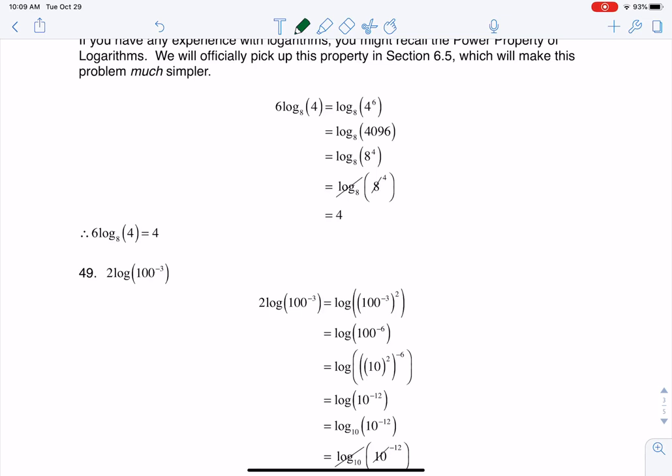And when I say these problems, I mean, what do you do when you have a coefficient out in front? And if you've ever done any logarithmic work before, you've probably seen this property. And if you haven't, that's okay. We'll pick it up in 6.5. But what the power property says is when you have a constant out in front, you can move it up to your argument as an exponent. So that's what you see here. Instead of my argument just being 4, now I'll make it as 4 to the 6th.